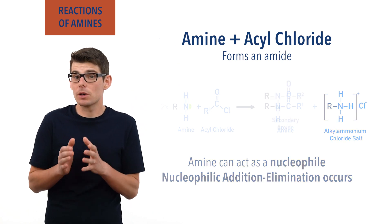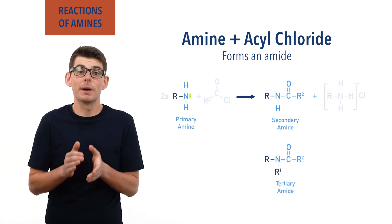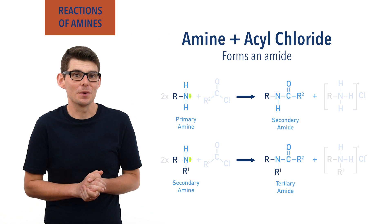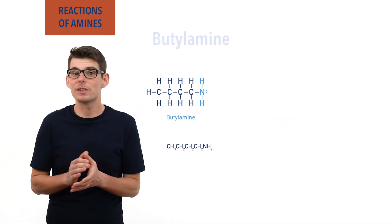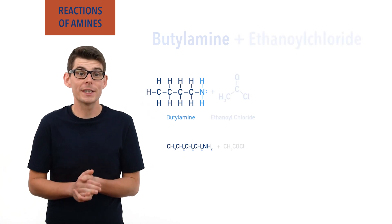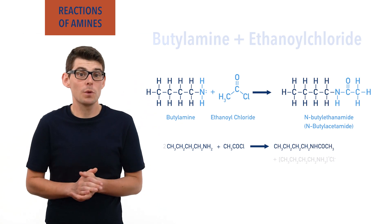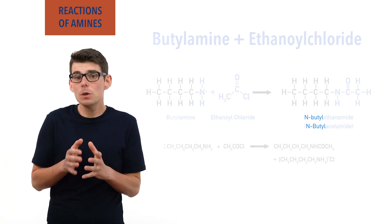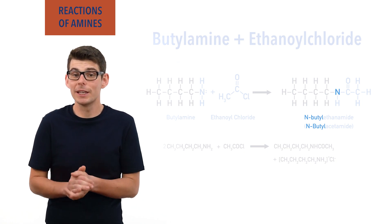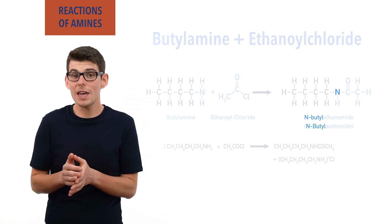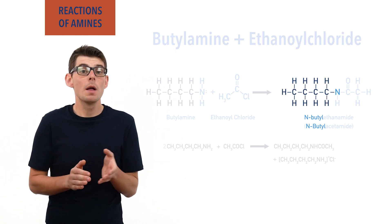Secondary amides are formed by primary amines with acyl chlorides, and tertiary amides by secondary amines with acyl chlorides. For example, butyl amine can react with the acyl chloride ethanoyl chloride, and the secondary amide N-butyl ethanamide gets formed. The N-butyl part of the name tells us that the nitrogen in the ethanamide has a butyl carbon chain bonded to it, the butyl chain coming from the original butyl amine.